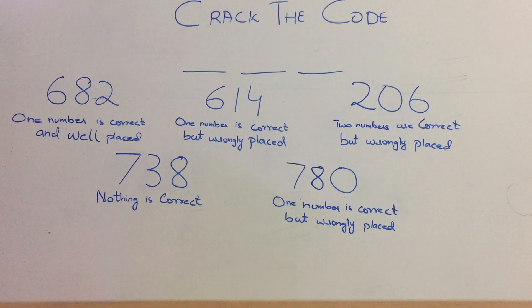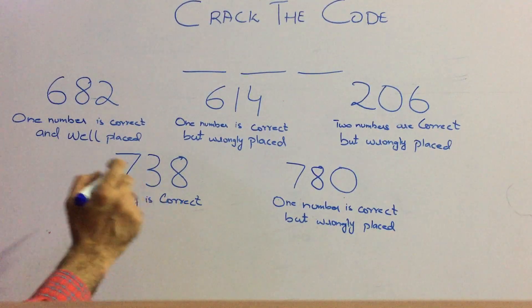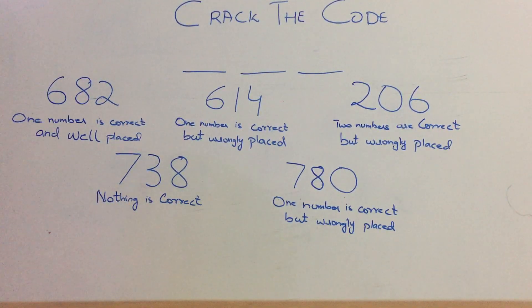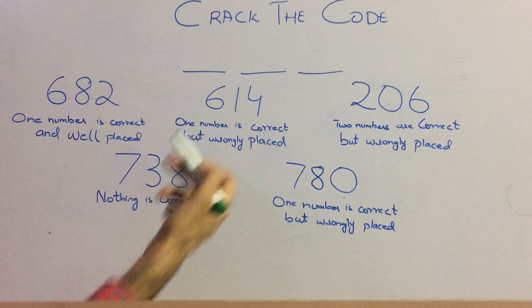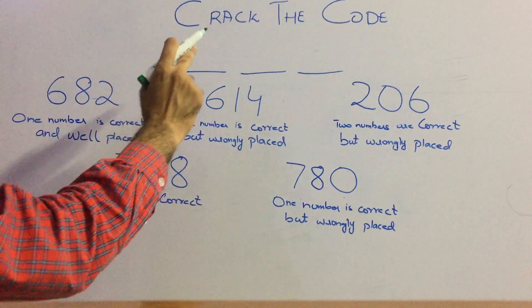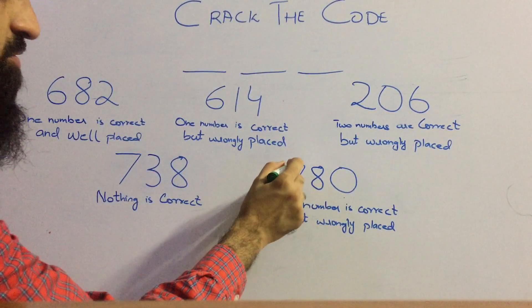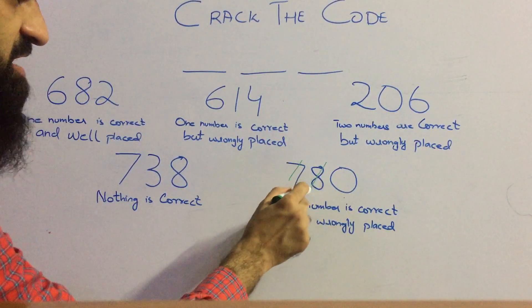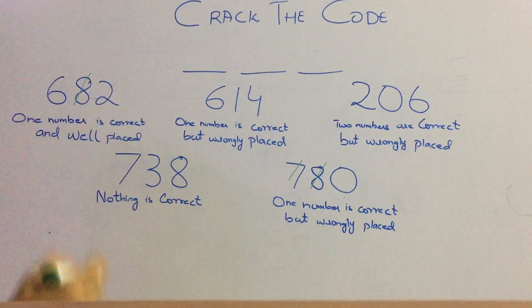Let's start with the fourth one that nothing is correct. So we know that wherever there is 7, 3 or 8, we have to cancel it because nothing will be in this number. So we will cancel 7 from here, 8 from here, and 8 from here.